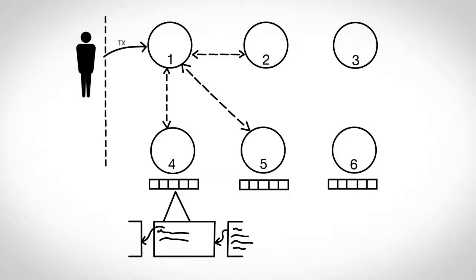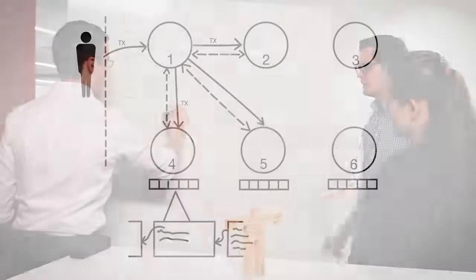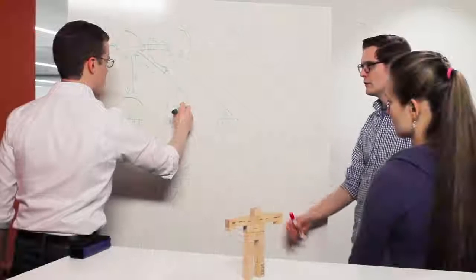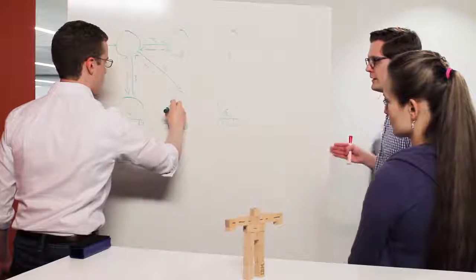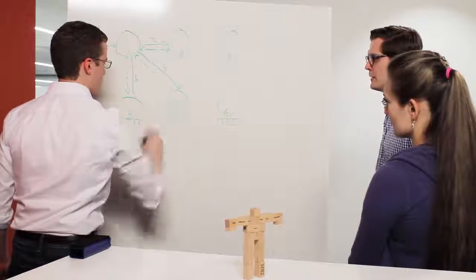In addition to the transactions, each block also contains a hash of the previous block, and this is where the blockchain concept comes from. So as the chain gets longer and longer, the chain becomes stronger for older blocks because they're hashed into each subsequent block.